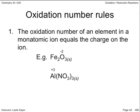Rule number one, the oxidation number of an element in a monatomic ion equals the charge on the ion. And this follows the previous examples. An oxygen ion, as found in iron three oxide, for example, has an oxidation number of negative two. The aluminum ion in aluminum nitrate is positive three.